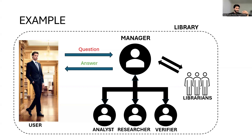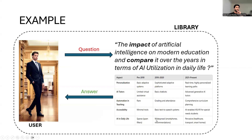Finally, we also have a verifier. This verifier will double-check the facts and ensure the output is accurate — it represents the verification module in the Agentic RAG. Once they perform all the tasks, they produce the most accurate response as the answer. See how detailed and sophisticated it looks. The information is categorized based on the aspects as well as the timelines.